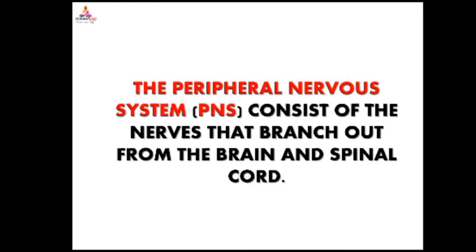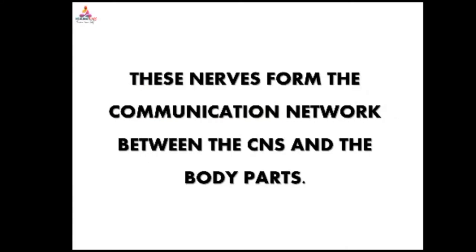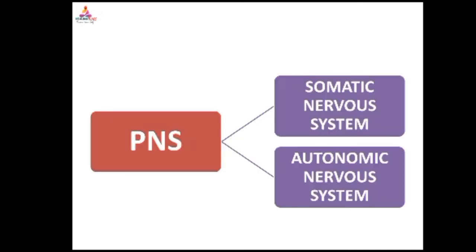The peripheral nervous system consists of the nerves that branch out from the brain and spinal cord. These nerves form the communication network between the CNS and the body parts. The peripheral nervous system is mainly divided into the Somatic Nervous System and the Autonomic Nervous System.